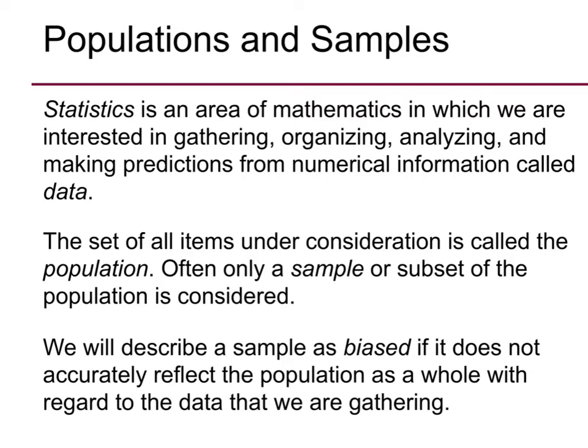This first section is pretty introductory, but we get a definition for population — that is all of the items under consideration, whether they're people or objects; it's the list of all of the items that you're talking about. And then your sample is a subset of that population that you're considering. We describe a sample as biased if it does not accurately reflect the population as a whole with regard to the data that we are gathering.